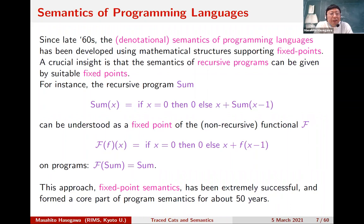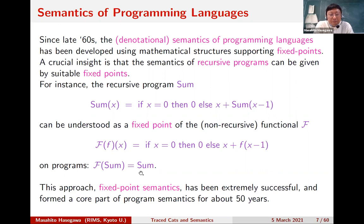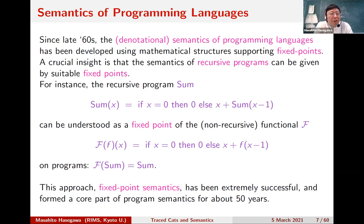The semantics of such a recursive program should be understood as a fixed point of some non-recursive functional F — a meta-program that takes a program as argument and returns another program. If you substitute small f into itself you get the original definition, so 'sum' is a fixed point of F. Fixed point semantics, usually based on domain theory, has been quite successful and is an essential part of programming language study for over 50 years.